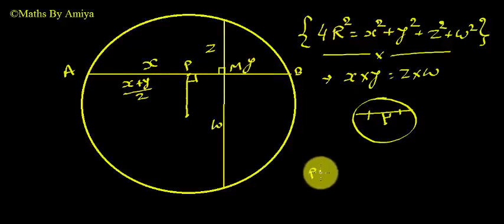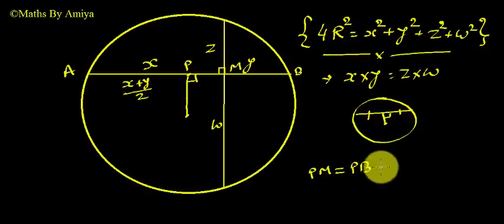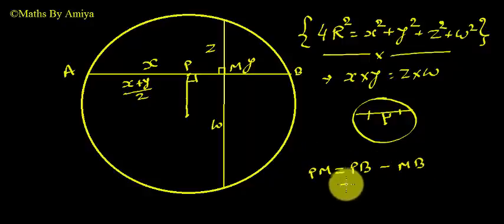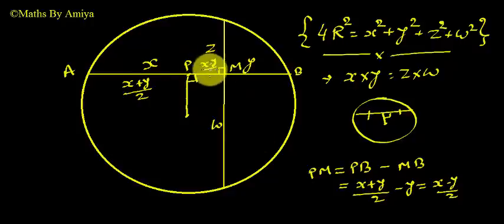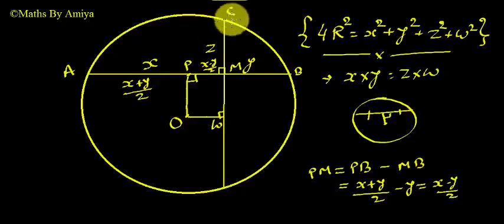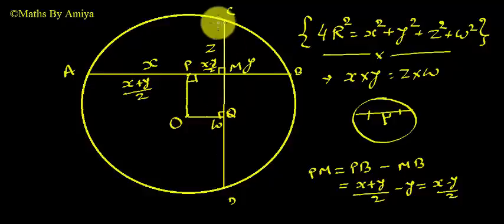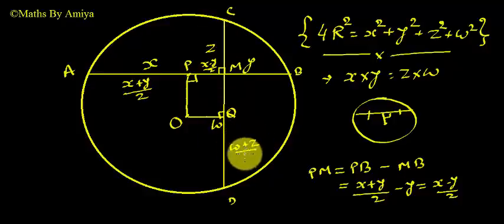We need to find PM. PM = PB − MB. PB is half the chord, which is (x + y)/2, and MB is y. So PM = (x − y)/2. Now from center O, draw a perpendicular on chord CD and name it Q. Q is the midpoint, so CD is divided into (w + z)/2 each side, and MQ = (w − z)/2.